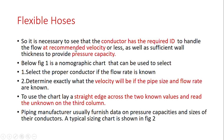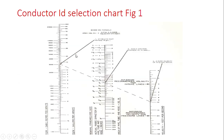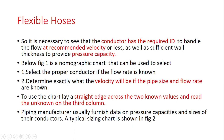A nomograph chart can be used to select the proper conductor. If the flow rate and pipe size are known, the velocity can be determined. If pipe size and velocity are known, the flow rate can be found. Lay a straight edge across the two known values and read the unknown on the third column. Piping manufacturers furnish data on pressure capacity and sizes of their conductors based on this chart.